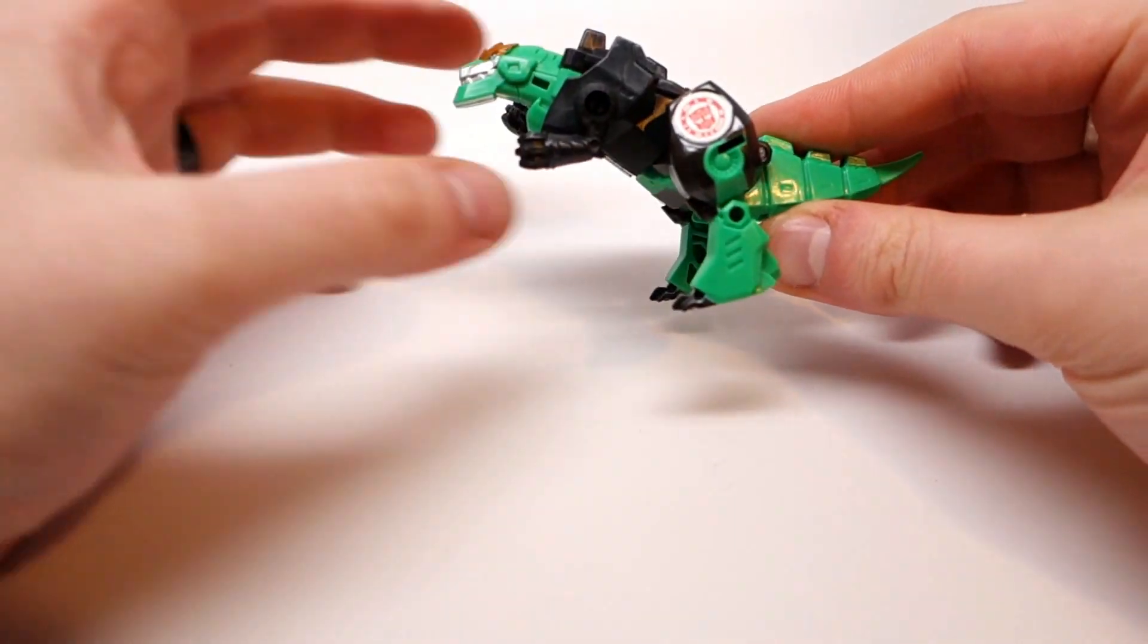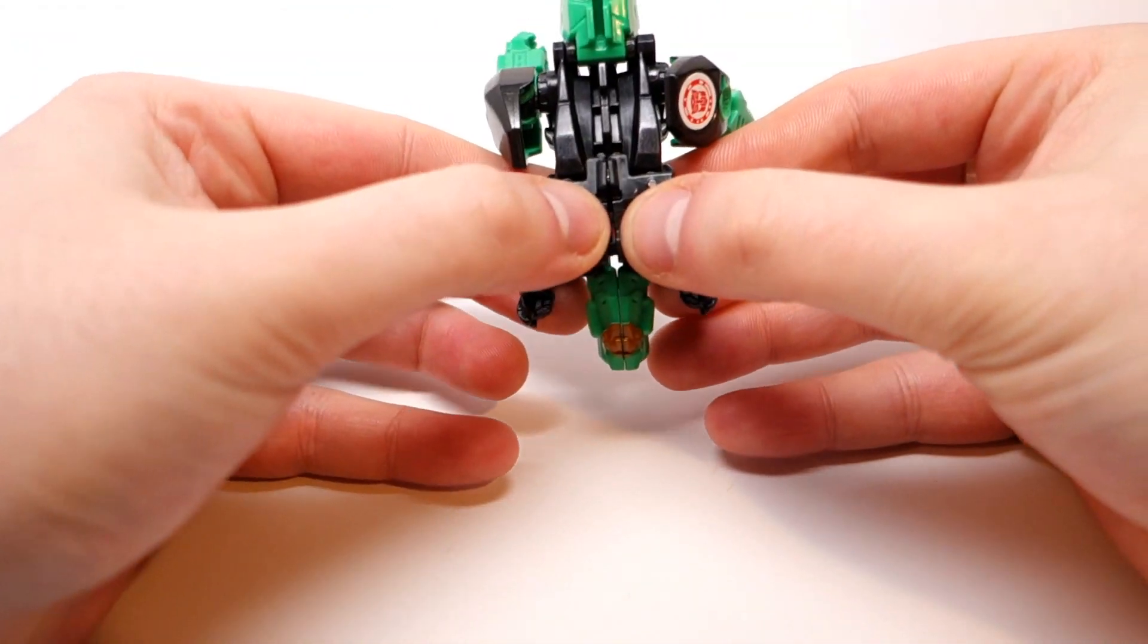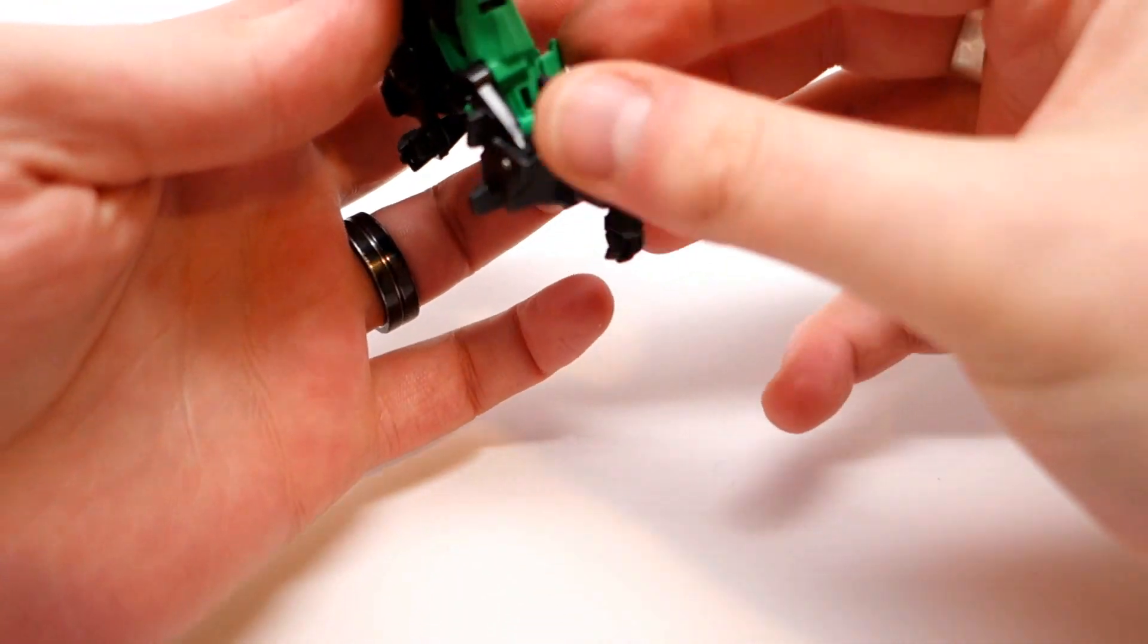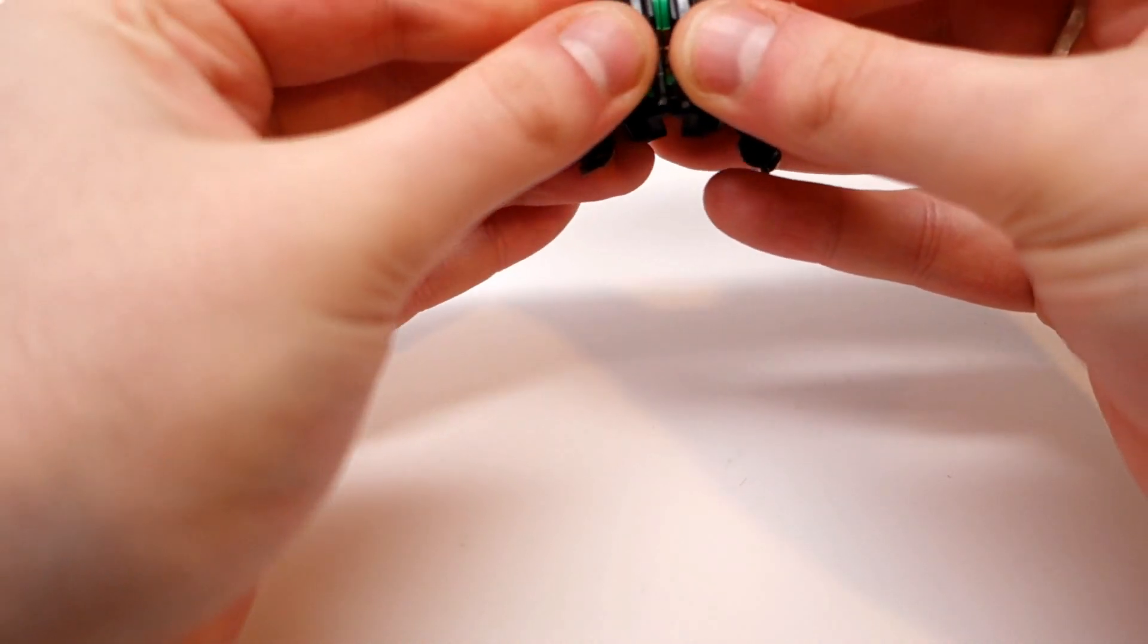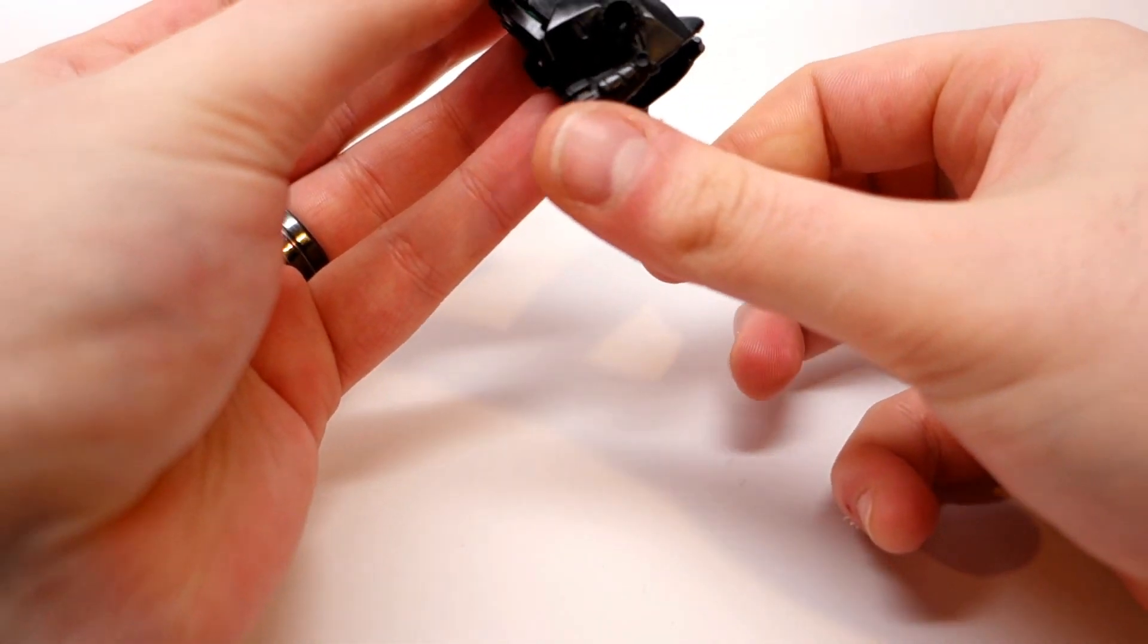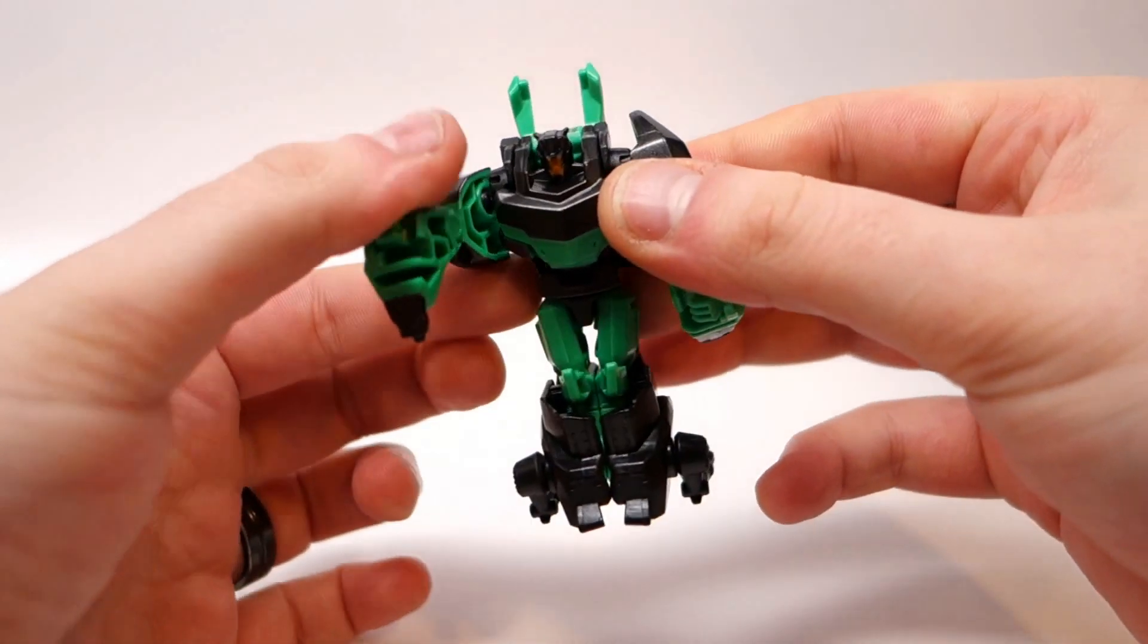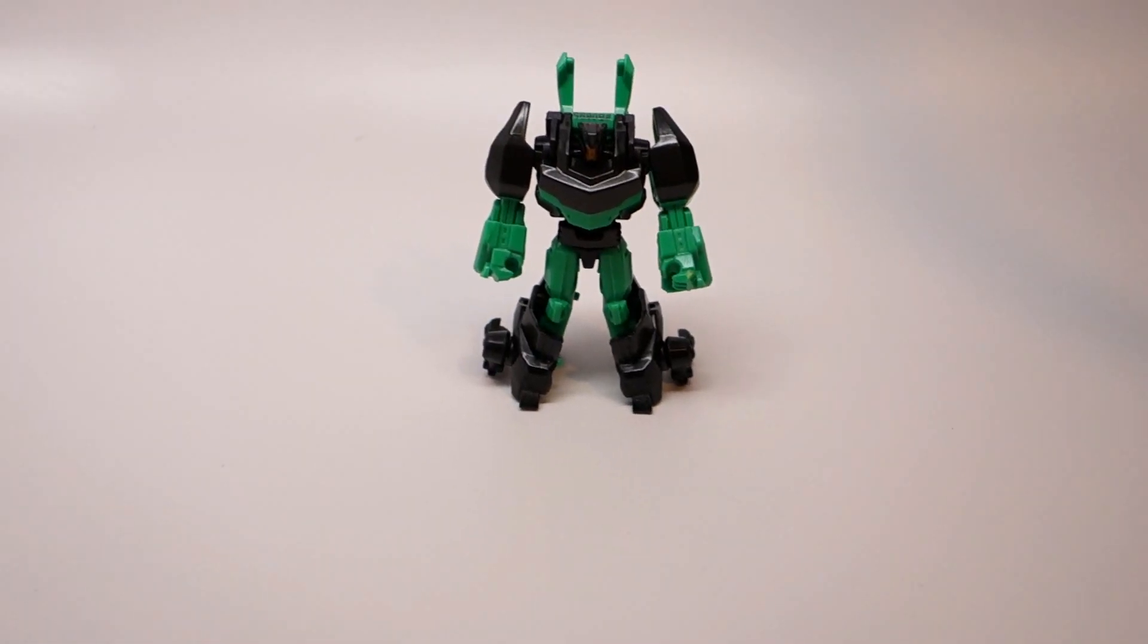To transform Grimlock, you just point these arms up to get them out of your way. Come in here and you just want to split these outer black parts, and they're going to swing down, and these pegs right here are going to peg into the sides of the legs right there. And then angle the arms back like that - they're going to become kind of like side heel spurs. Flip the tail down, straighten the arms out, and split the legs. And there you have Grimlock in his robot mode.